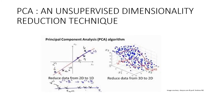PCA is an unsupervised dimensionality reduction technique that enables you to identify correlations and patterns in a dataset so that it can be transformed into a dataset of significantly lower dimension without loss of any important information. The main idea behind PCA is to figure out patterns and correlations among various features in the dataset. On finding a strong correlation between different variables, a final decision is made about reducing the dimensions of the data in such a way that the significant data is still retained.